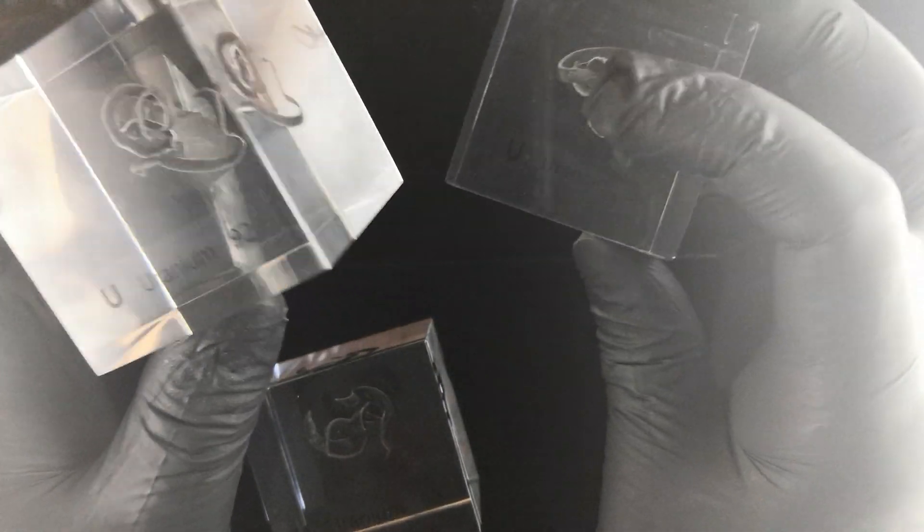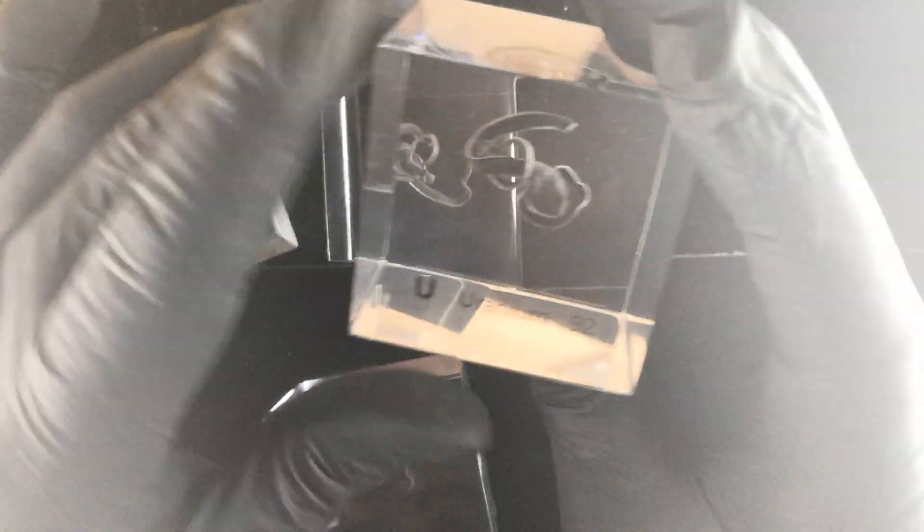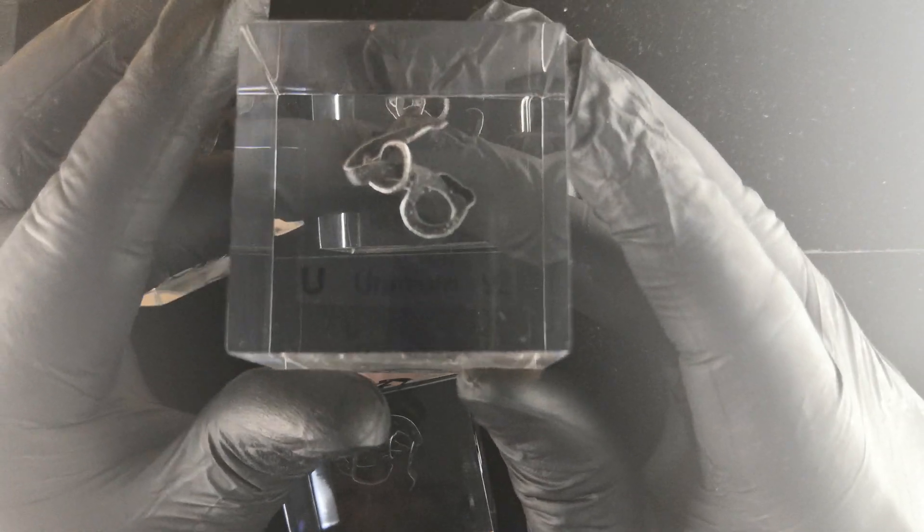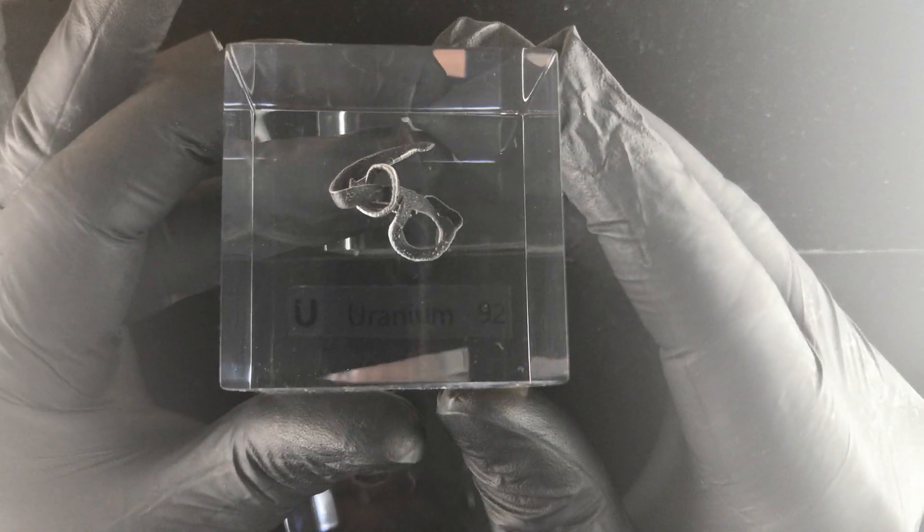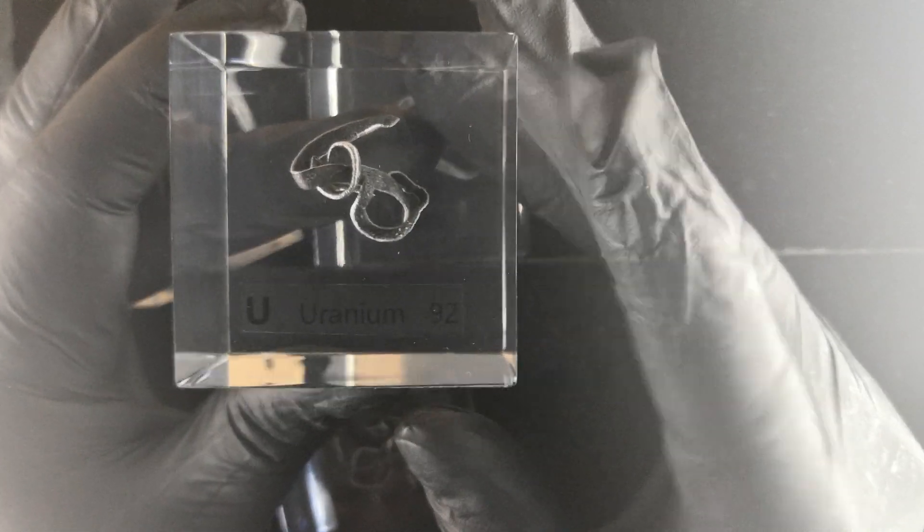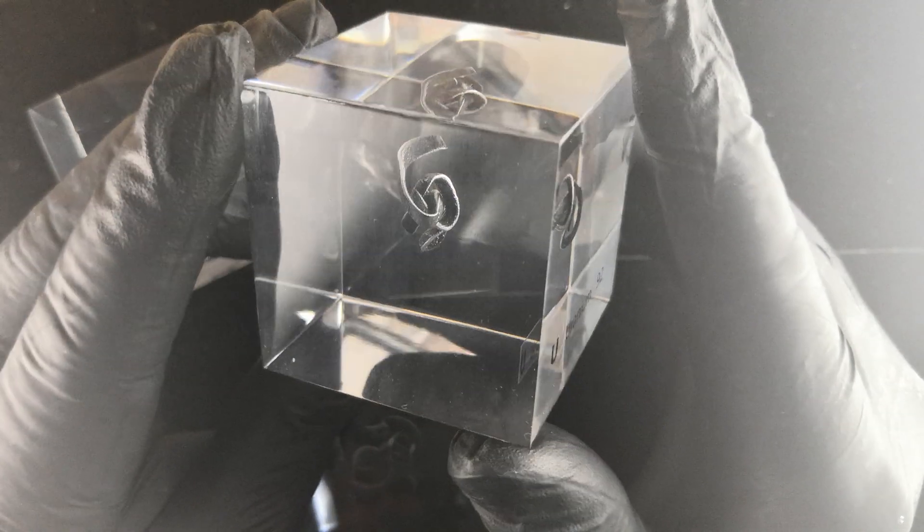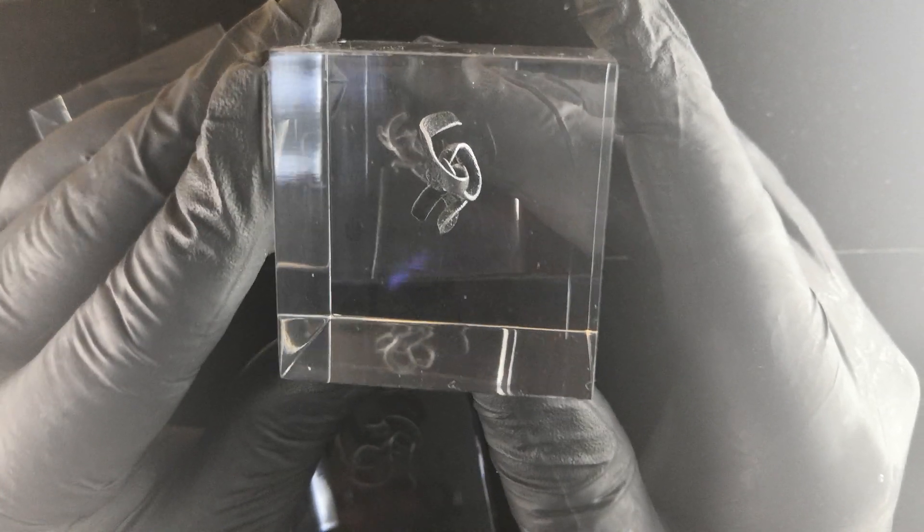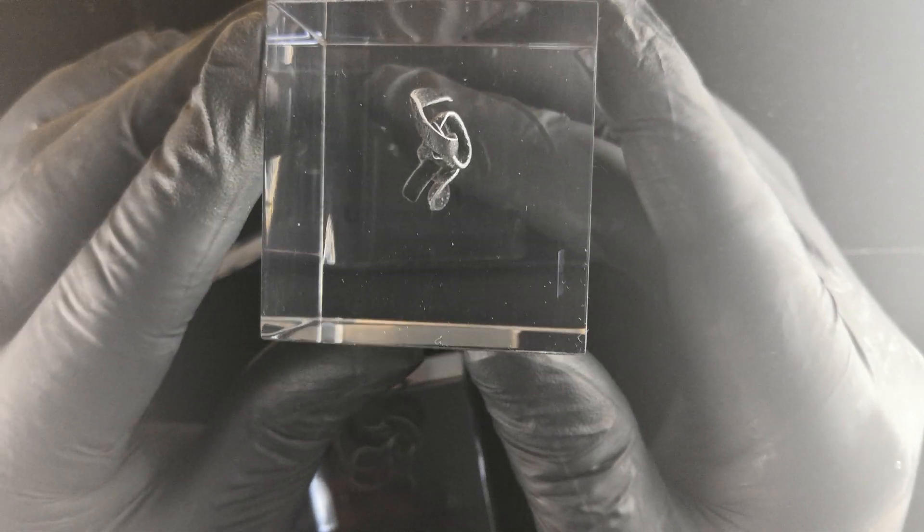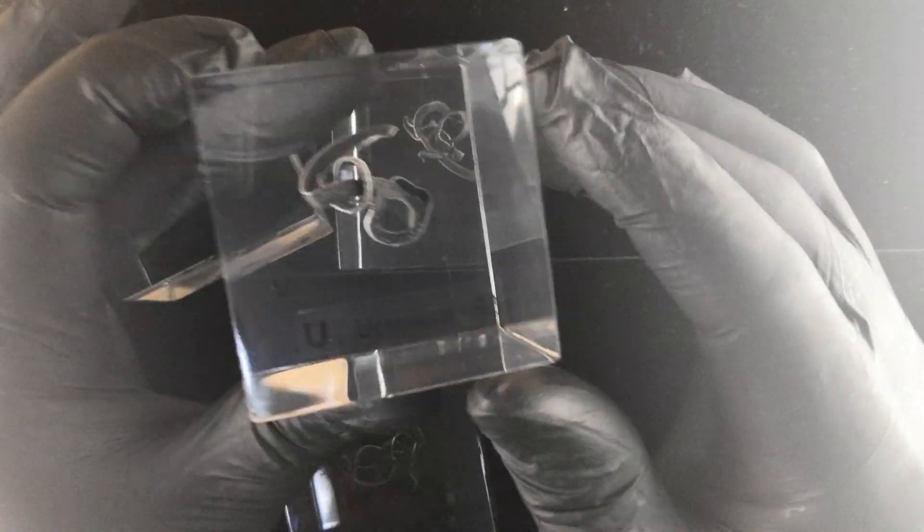The other notable aspect of these cubes is that you will not be able to tell any radiation if you have like a Geiger counter. The reason being is that the type of radiation that uranium metal emits is alpha particles.